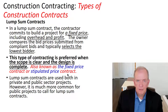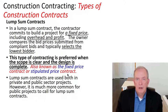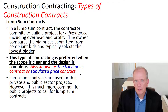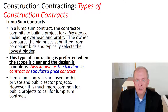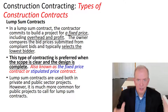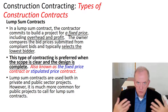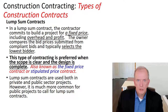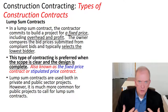Lump sum contracts — also called fixed price or stipulated price contracts — set the price for the whole project from the get-go. You need really well-developed drawings and specifications because that's what the price is based on. If there are a lot of changes once the project is underway, you lose the benefit of a lump sum. In some cases, the value of changes can reach 50 to 100 percent of the contract price — at that point you don't really have a lump sum anymore.